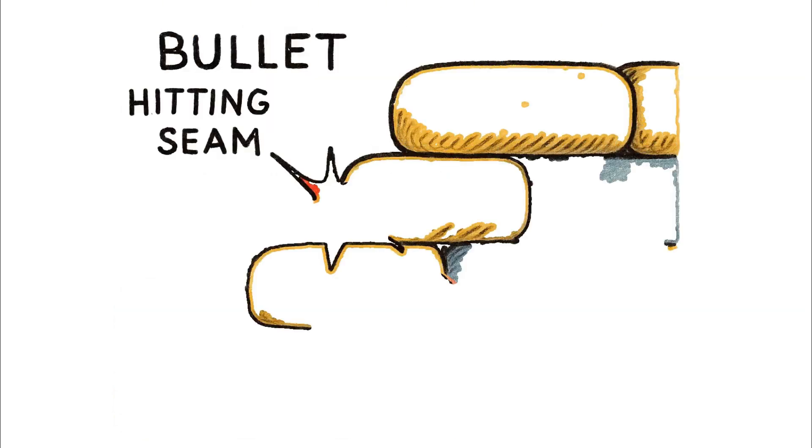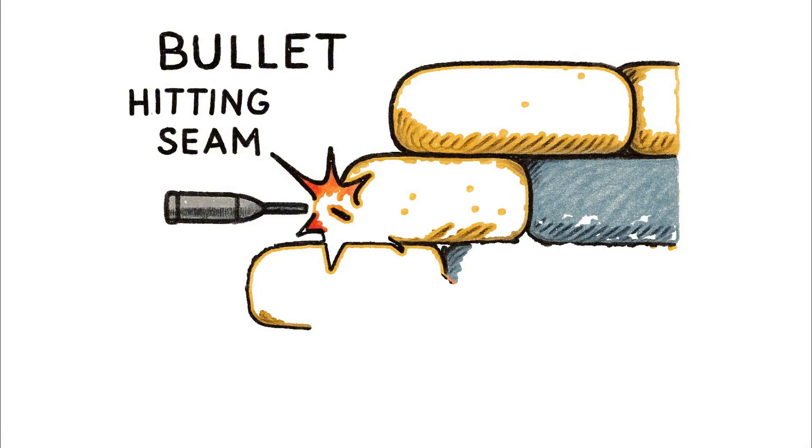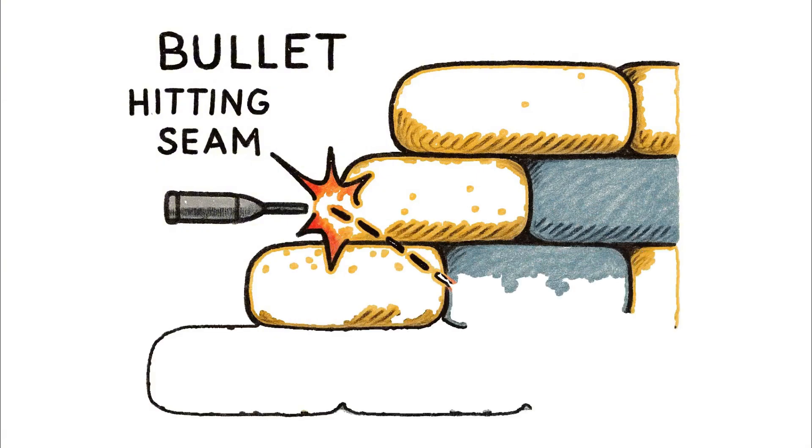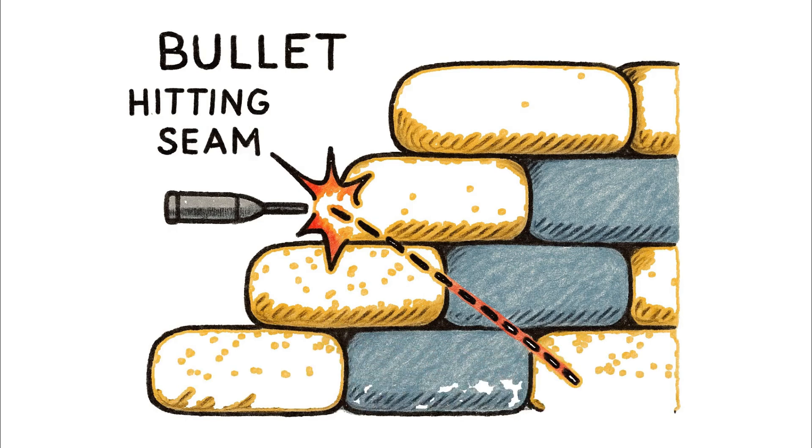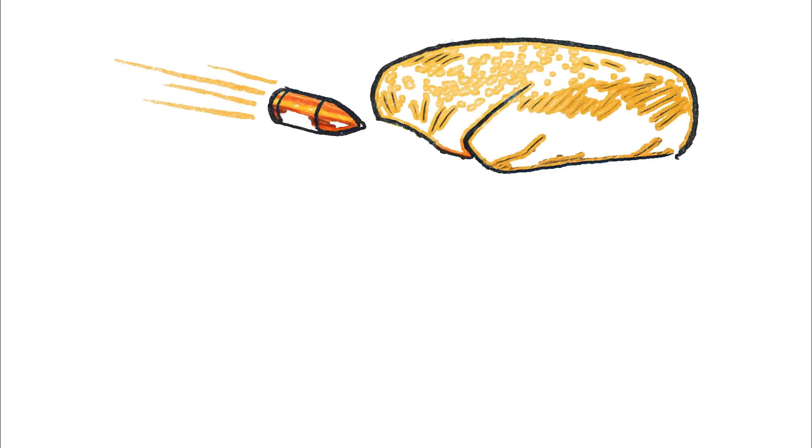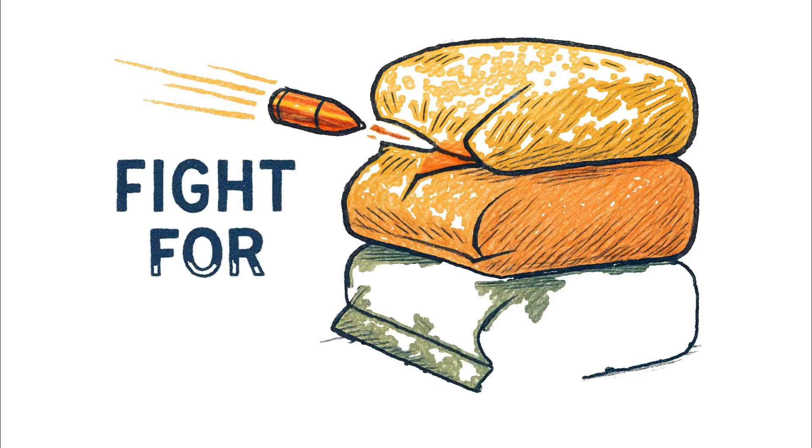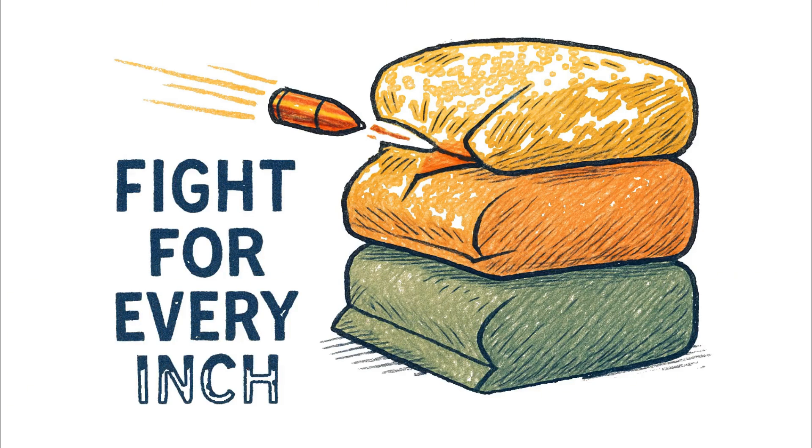Now, a bullet hitting anywhere on the wall, even on a seam, cannot travel in a straight line through a weak point, because it is immediately forced to dig diagonally through the dense, compacted body of the bag above or below it. This forces the bullet to fight for every single inch and eliminates the path of least resistance.